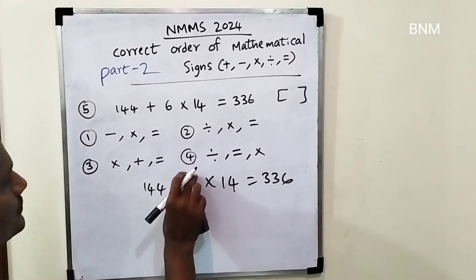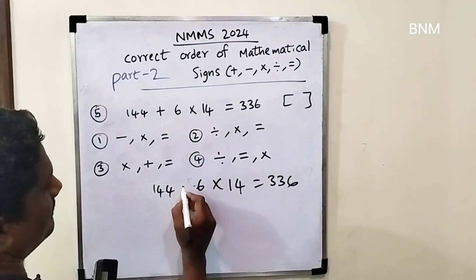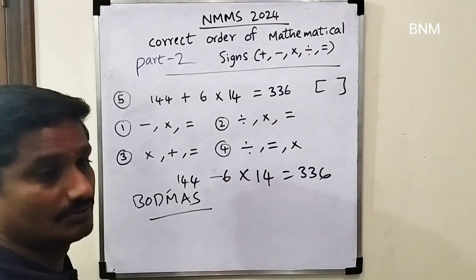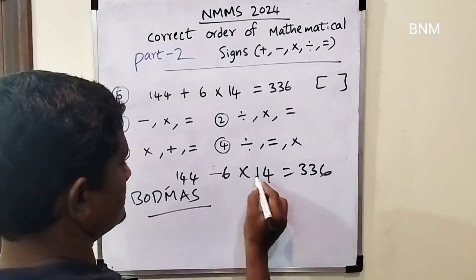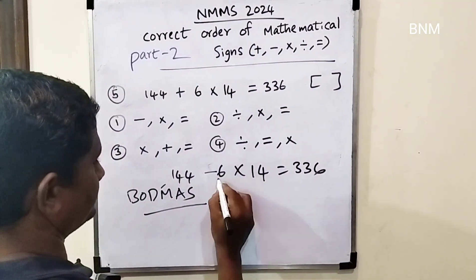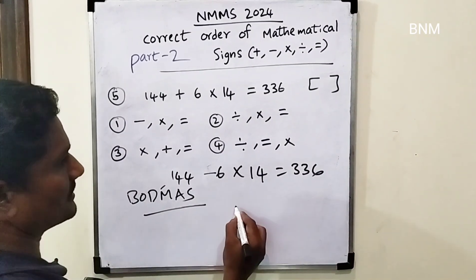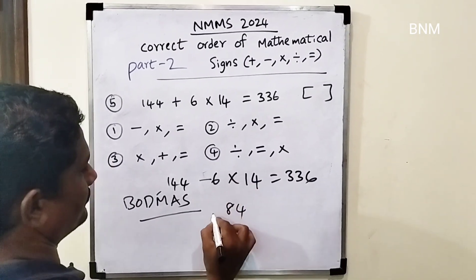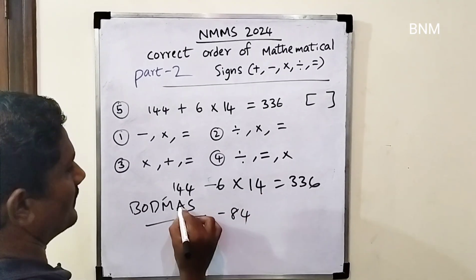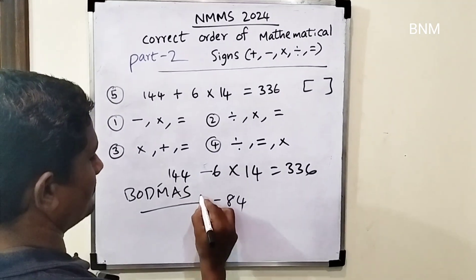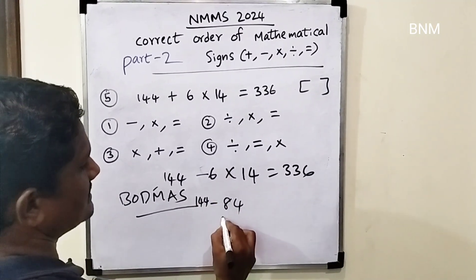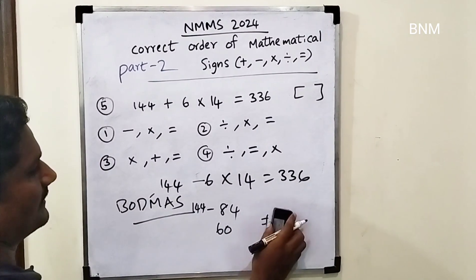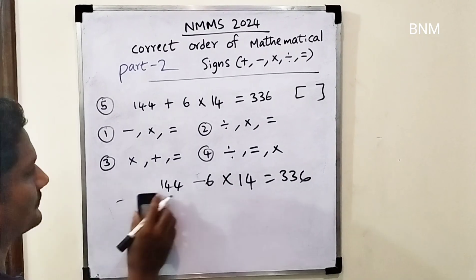First option is the right answer. Minus, then equal to. Multiplication is equal to 64. Number 18 is the right answer — 84. This is the right answer: 144 and 60 are calculated. First option is the right answer.